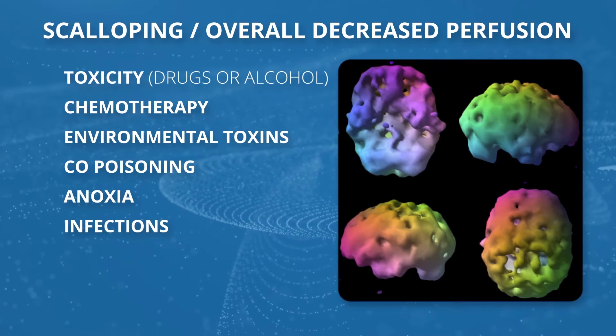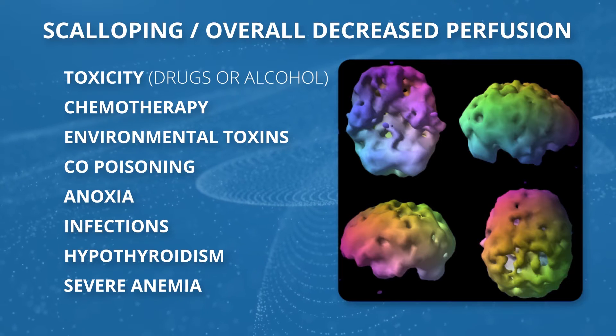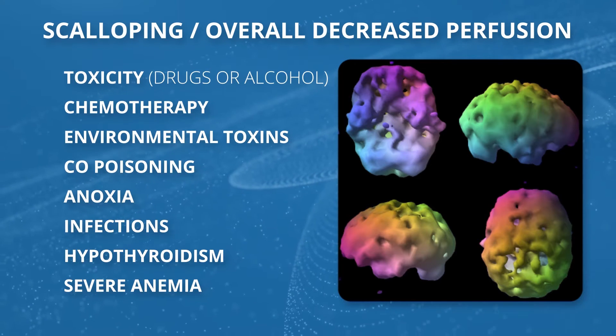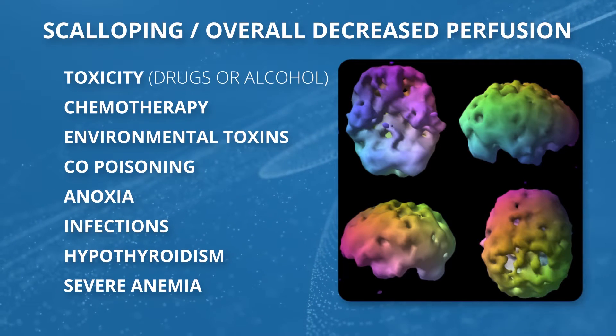For example, if you had a near-drowning episode or a heart attack where you stopped breathing for five or ten minutes, it can damage your brain. Infections, hypothyroidism, severe anemia — SPECT is a blood flow study, so anything that lowers red blood cells can, in effect, damage your brain. When we see this pattern, we always ask why.